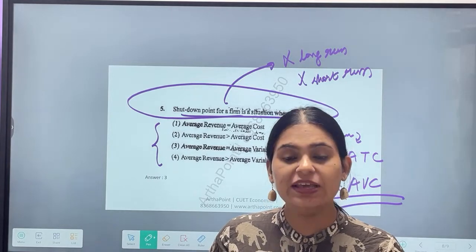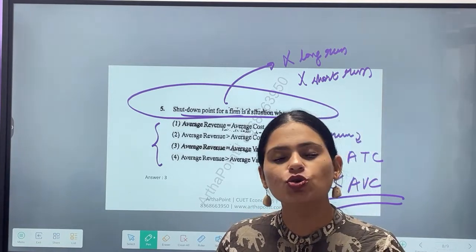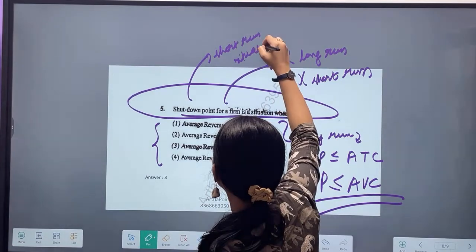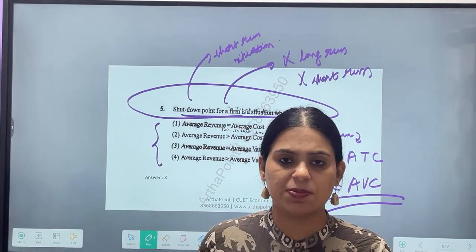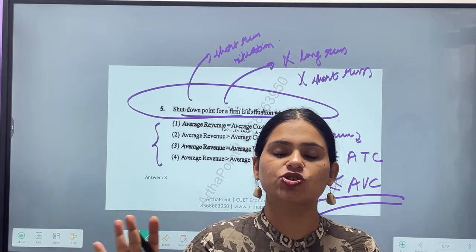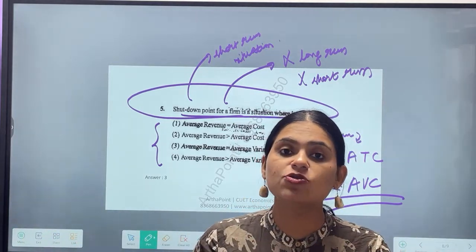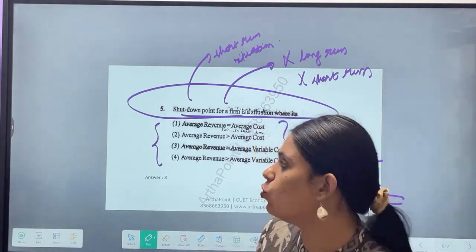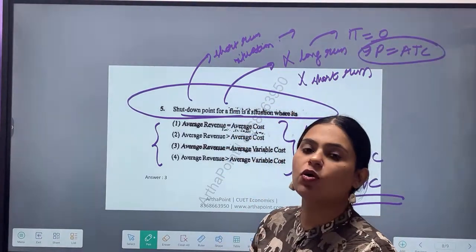But here they have not mentioned whether long run or short run. So in exams, if they don't mention whether they are asking for long run or short run, you will assume that it is a short-run situation. Why? Because in long run, firms' entry or exit takes place such that firms will always earn normal profit. Those firms in loss would have left the market, and those firms in profit would have attracted new firms. So you will assume that in the long run, firms will earn a normal profit. By normal profit we know that in the long run, π equals 0, which implies P equals ATC - I am able to cover all my cost.